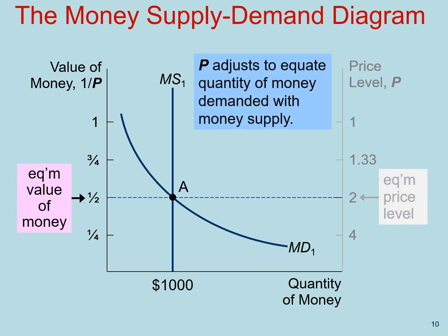Price adjusts to equate the quantity of money demanded with its supply. Let's think about a surplus of money. Suppose that the value of money was three-fourths, or that the price level was 1.3. At that point, quantity demanded is well below the quantity supplied and we have a surplus of money. In this case, people bid up the price of goods and services, increasing prices until we reach the equilibrium value of money of one-half and a price level of 2.